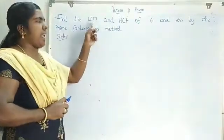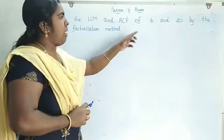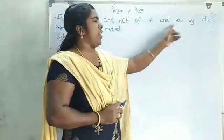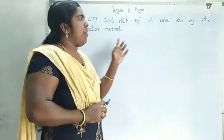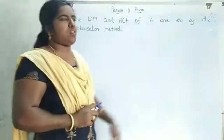We want to find the LCM and HCF. The numbers are 6 and 20. First, find out the factors for 6 and 20.